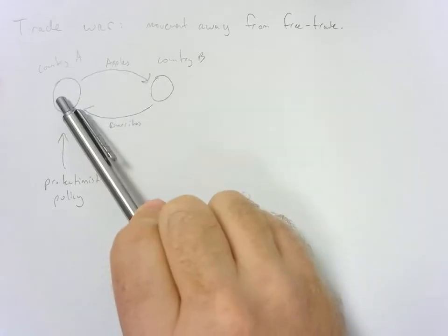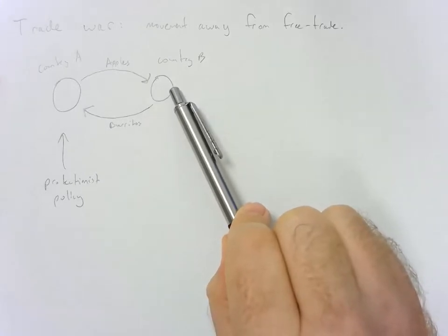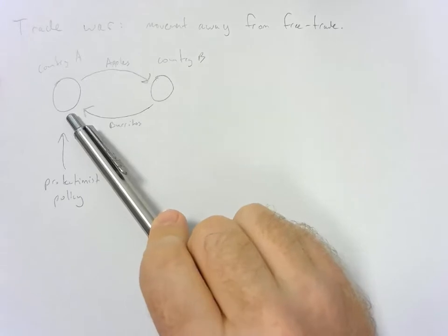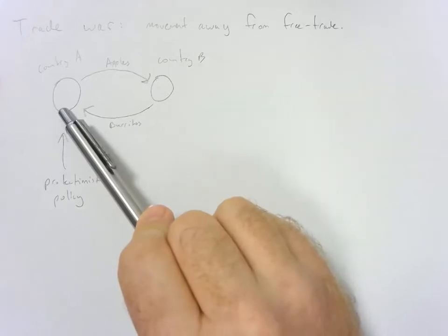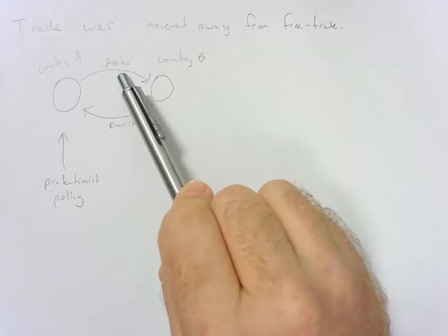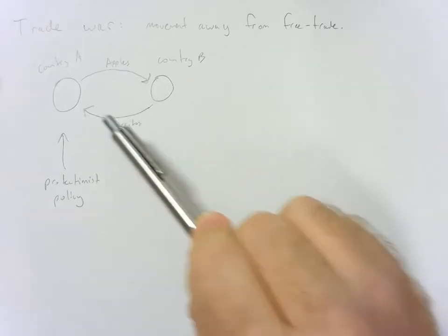Country A may be really good at producing apples, ships them to country B. Country B may be really good at producing burritos, and ships them to country A. So you could imagine that country A has a comparative advantage in apples. Country B has a comparative advantage in burritos. They trade.